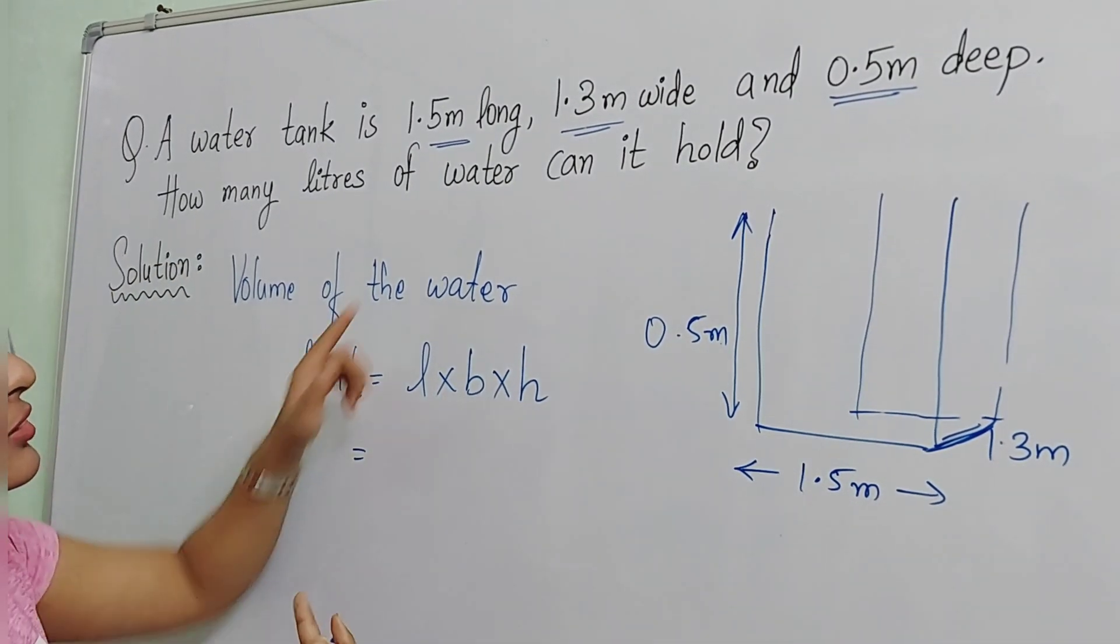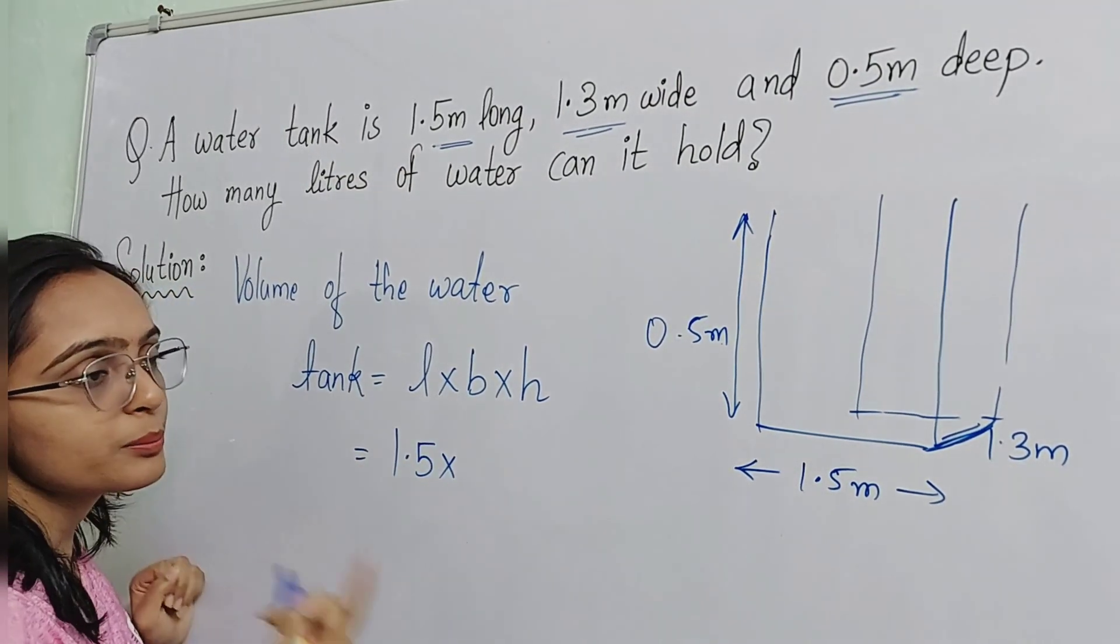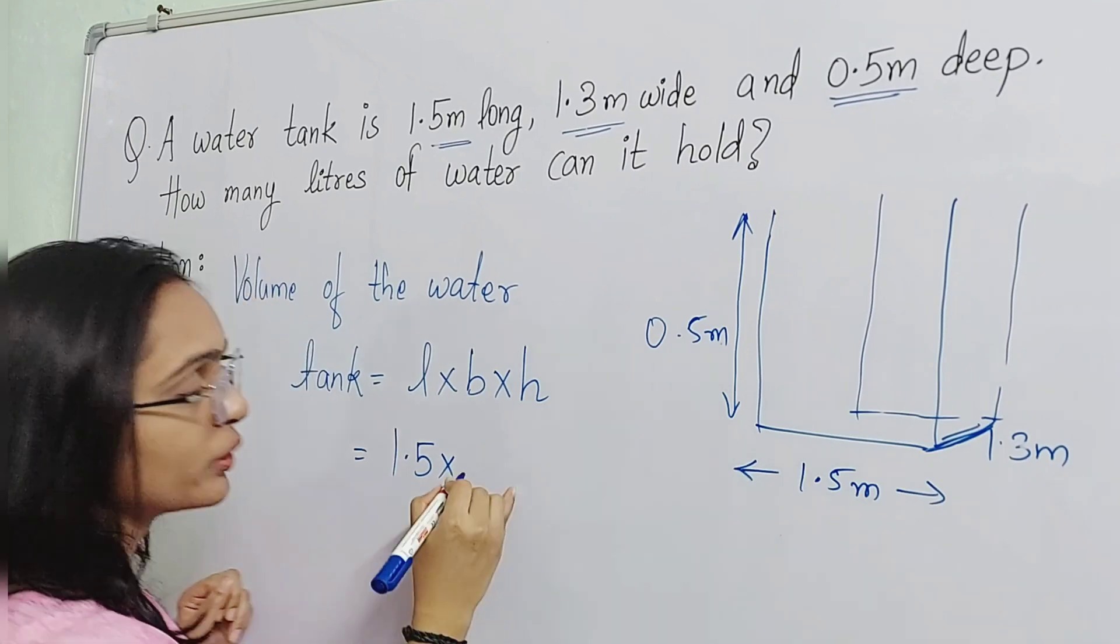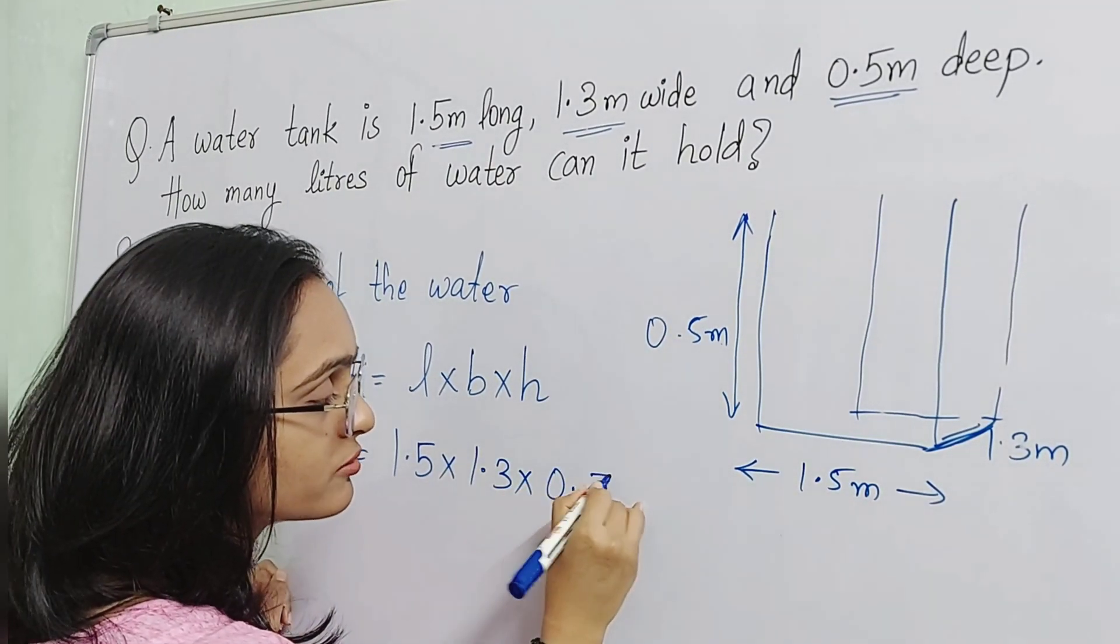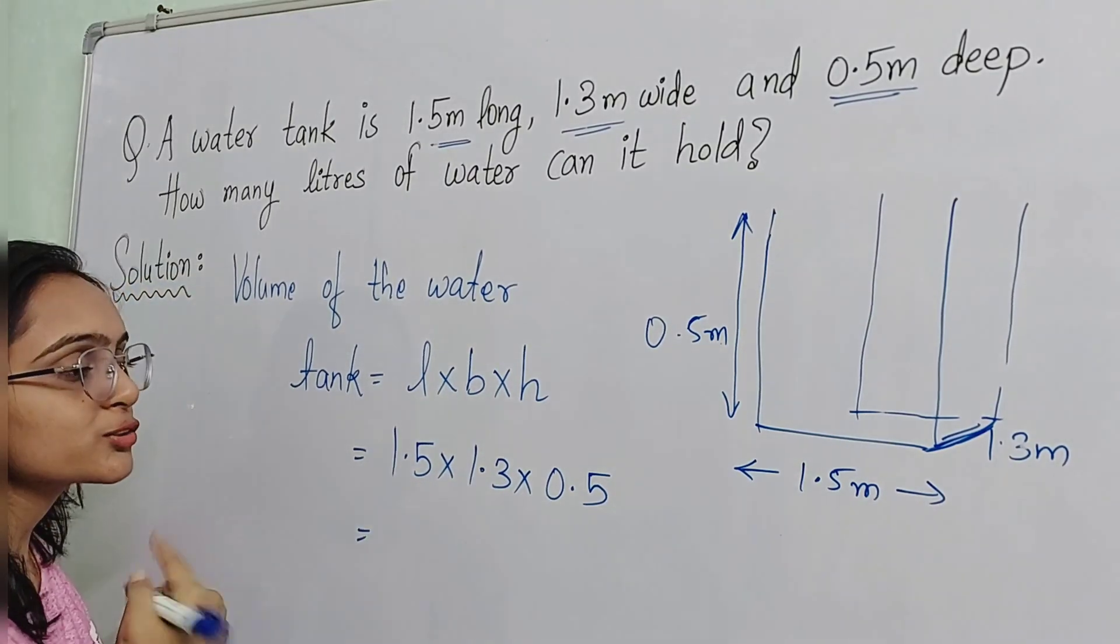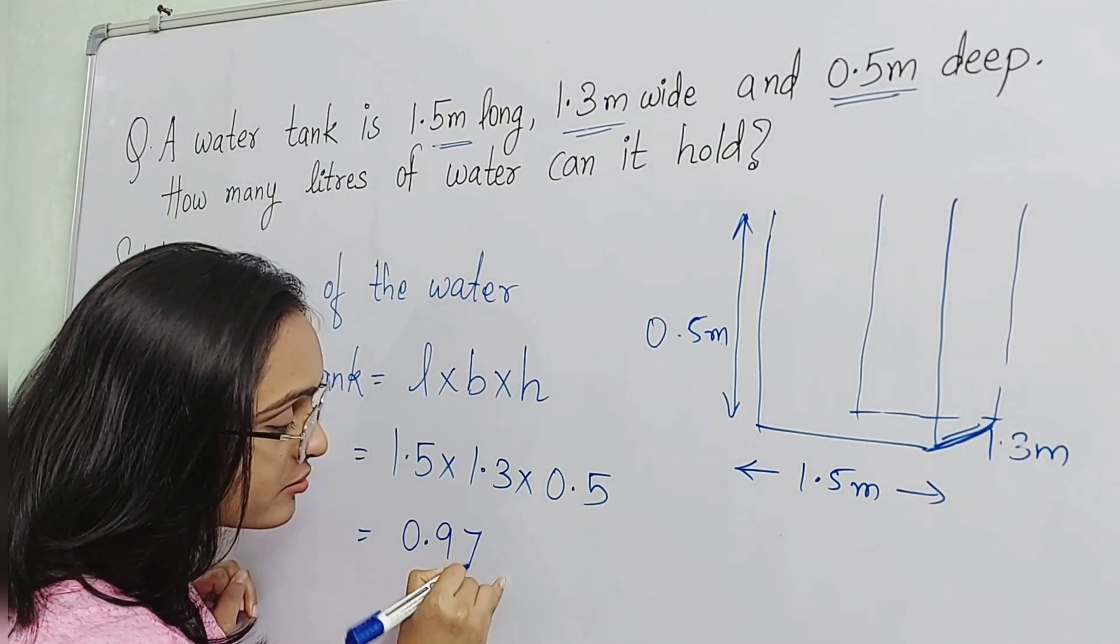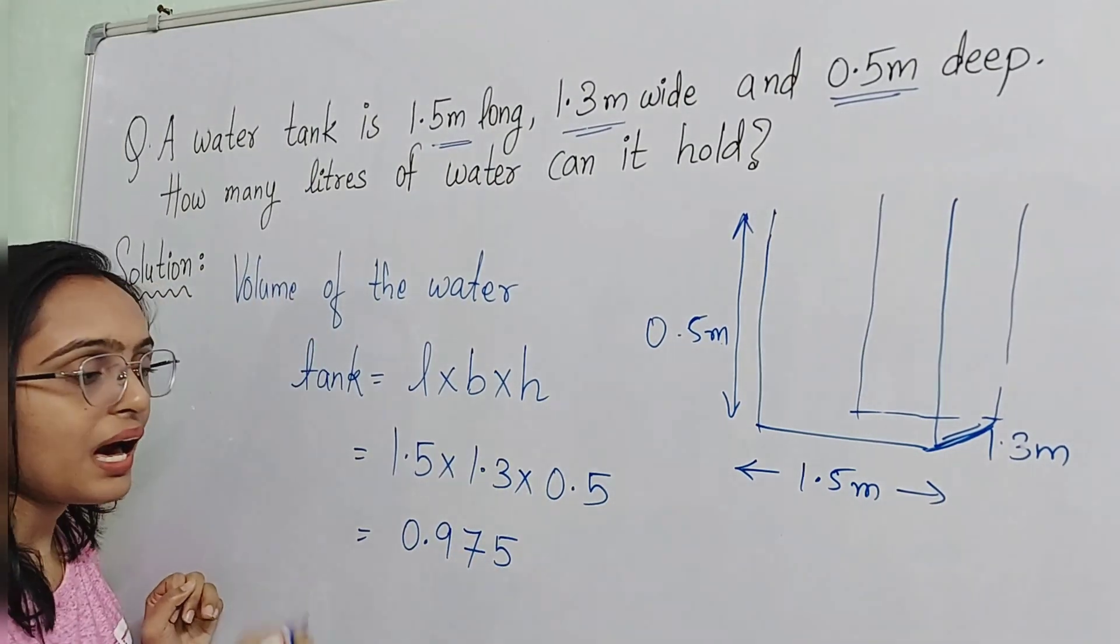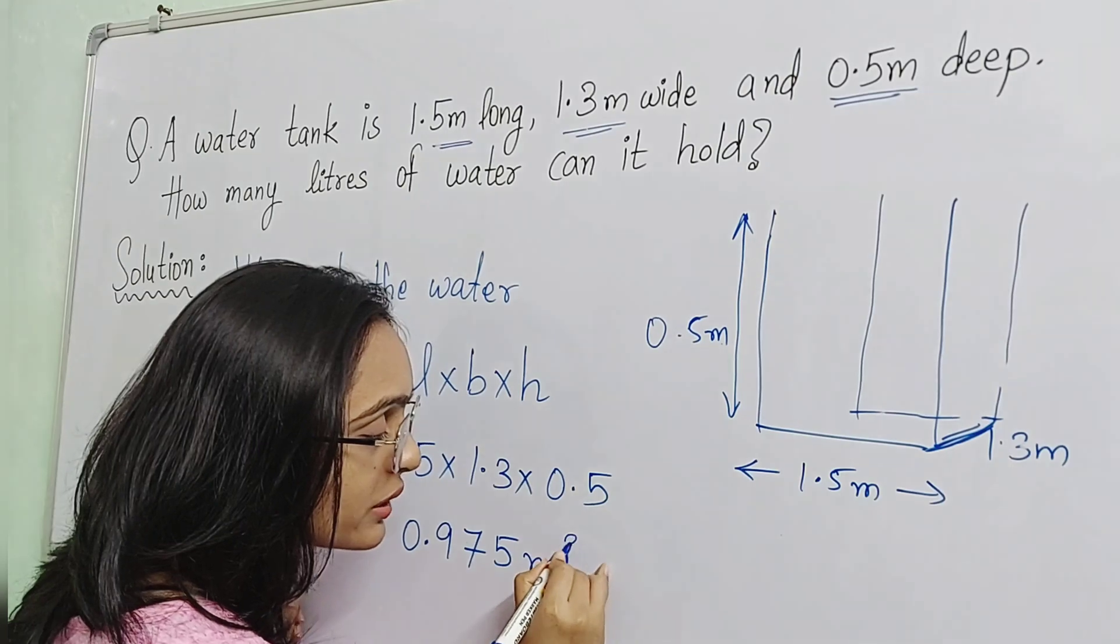Length is given here. So, 1.5. Breadth is 1.3. And height is 0.5. If you multiply this, the answer will be 0.975 meters cube.